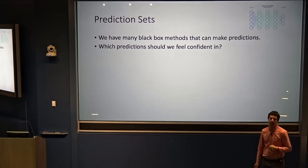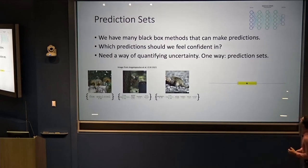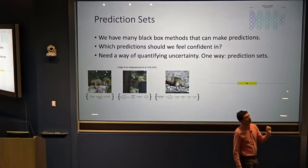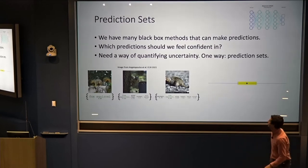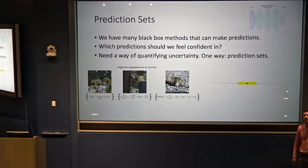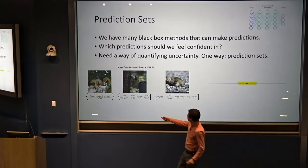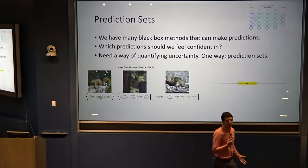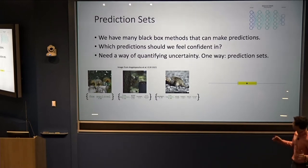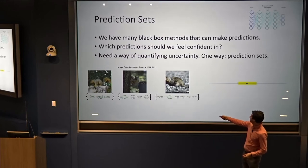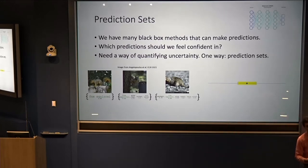We need some way of quantifying uncertainty. One natural way is, rather than making just point predictions, to give prediction sets. For example, if I have an image and I'm trying to predict what animal is in the image — maybe if I'm really confident I'll just say this is a fox squirrel, but maybe I should give a list of labels: it could be a fox squirrel, a marmot, a mink, a weasel.